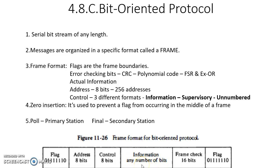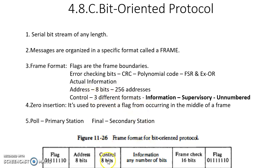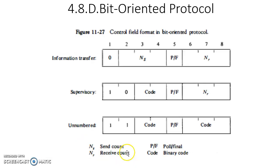When any number of bits are used, there is a possibility of getting the combination 0-1-1-1-1-1-1-0, which is considered a flag. To avoid the occurrence of this flag pattern within the information, a technique called zero insertion is used. Whenever the information contains a flag-like pattern, a zero is inserted into that pattern so that the flag occurrence can be avoided. Now let us look at the control format — there are three different types of 8-bit control information formats.